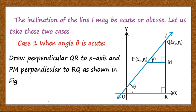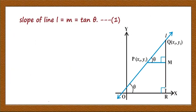Draw perpendicular QR to the x-axis and PM to QR. The slope of the line L is equal to m, which is equal to tan theta by the definition of slope. If theta is the inclination of the line, slope m = tan theta. Let us call this equation 1.